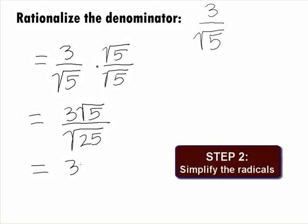In Step 2, we want to simplify the radicals, which will give us 3 square root of 5 over 5.